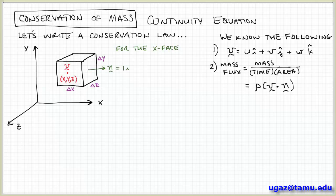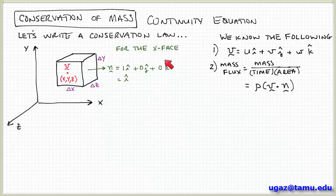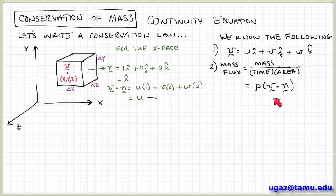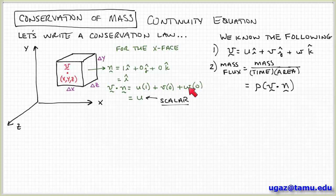Let's look at one of the faces of this cube — the x face. I can determine its normal vector: this face has an outward-pointing normal in the plus x direction, so n has components 1i + 0j + 0k, meaning the unit normal vector for this surface is just i. Then v dot n is the dot product of the velocity times the normal vector: u times 1, plus v times 0, plus w times 0. So v dot n is just u — the dot product between two vectors returns a scalar quantity.